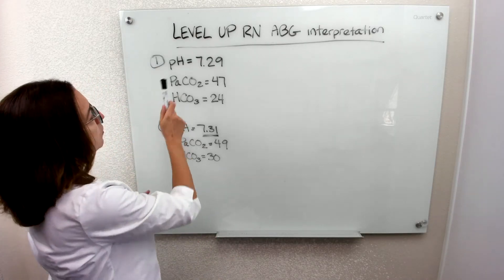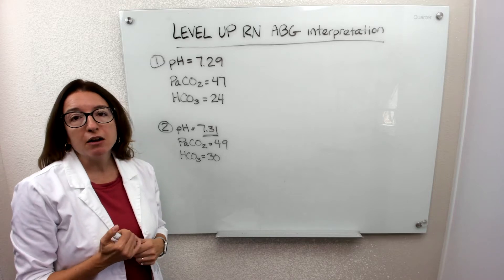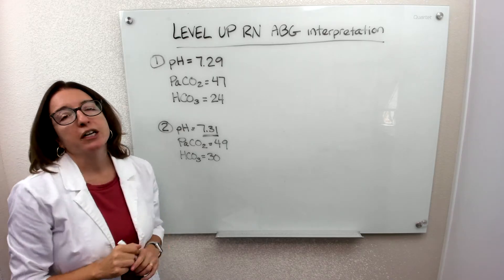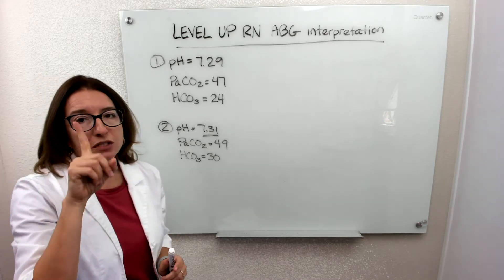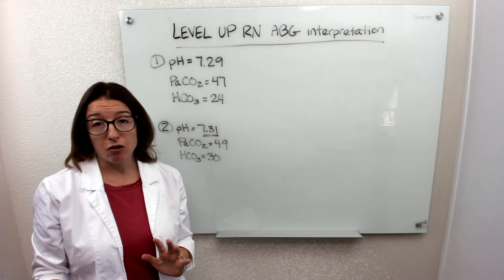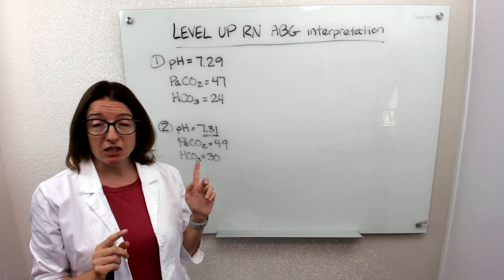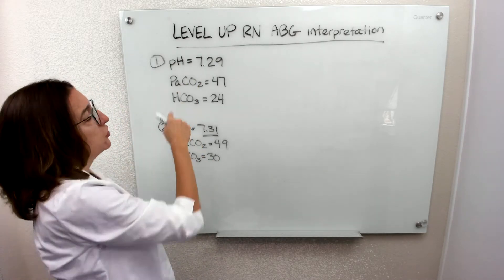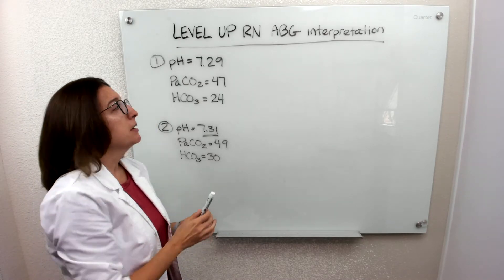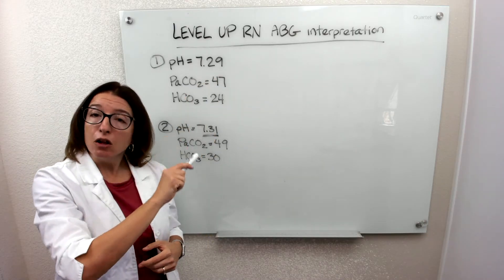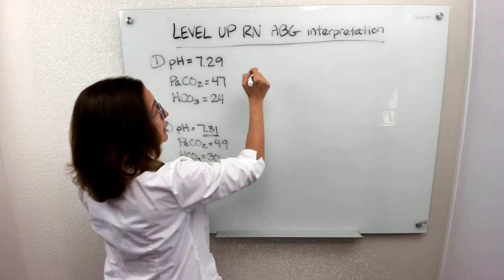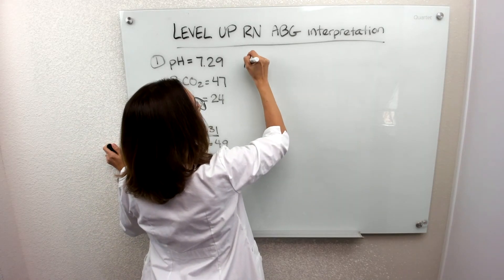Problem number one: pH is 7.29, PaCO2 is 47, HCO3 is 24. Step one is figuring out if we have acidosis or alkalosis, so let's look at the pH. pH should be between 7.35 and 7.45, but it is out of range on the low side, which means we have acidosis.